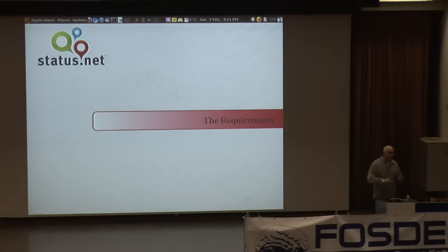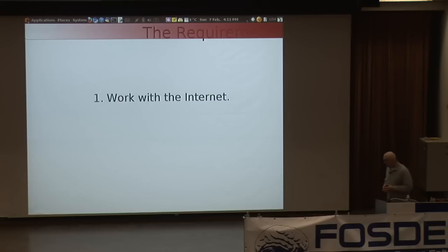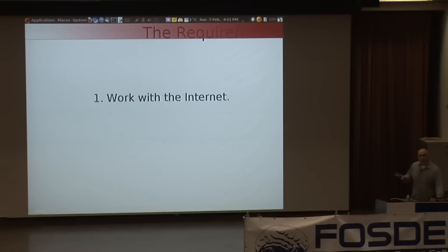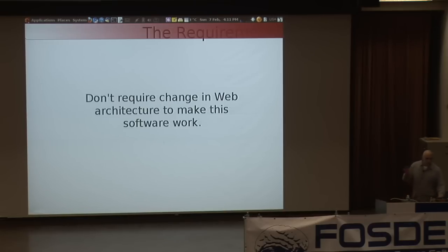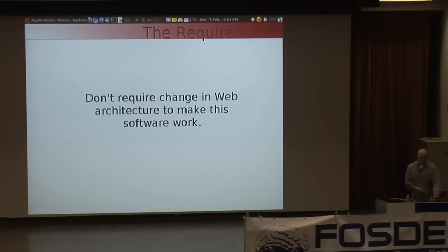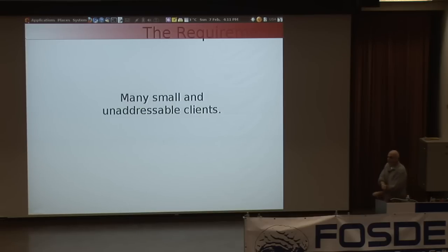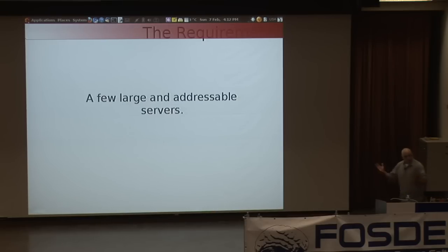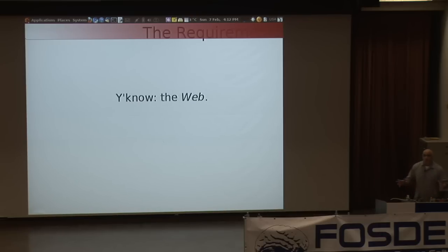I'm going to lay into some of the requirements I see for this kind of software. First and foremost, any kind of social status software has to work with the internet as it lives right now. I don't think we can require changes in the web architecture just to make our software work. The internet as it is now has many small, unaddressable clients — your IP address that you're using right now, you didn't know 10 minutes ago, and no one can reach you on it. And we have a few large and addressable servers — our web servers, our email servers — a hub-and-spoke architecture. It's the web. It's the way things work right now.